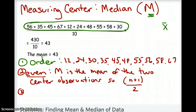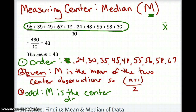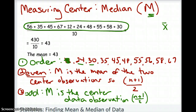If we remove one data point — say we drop the 12 — we now have an odd number of data points (9). With an odd number, you simply find the single center data entry. Using (n+1)/2: 9 plus 1 is 10, divided by 2 is 5, so you find the 5th value. Counting: 24 is 1st, 30 is 2nd, 35 is 3rd, 45 is 4th, 48 is 5th. So the median would be 48.